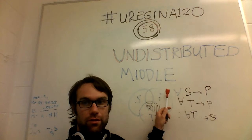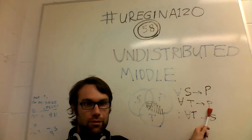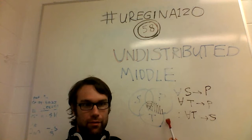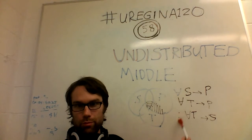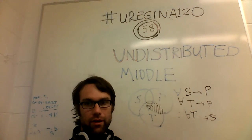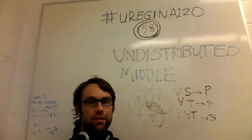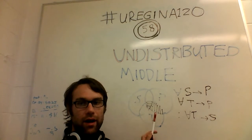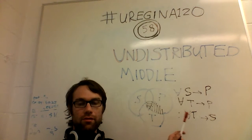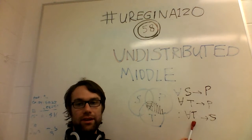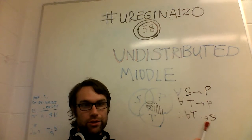Here's another example: all Russians are revolutionists, all anarchists are revolutionists, therefore all anarchists are Russian. Again, there's this undistributed part — the connection between T and S — that's not really defined. In this case, that's the connection between anarchists and Russians.